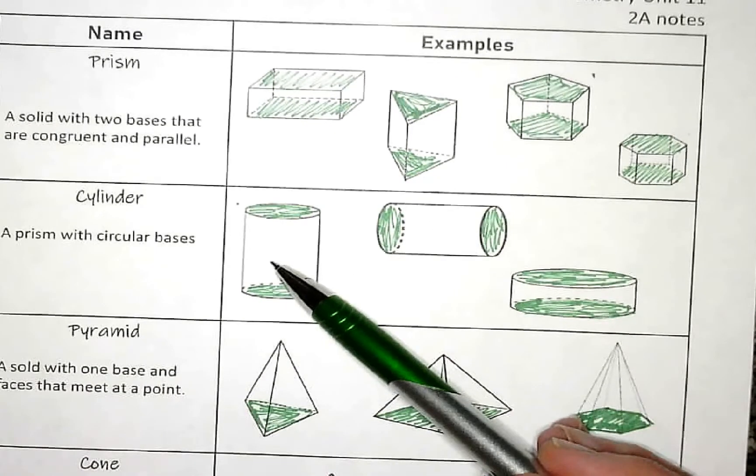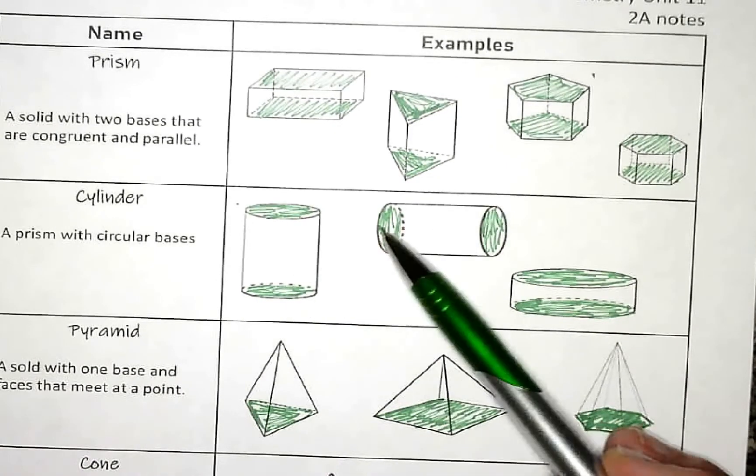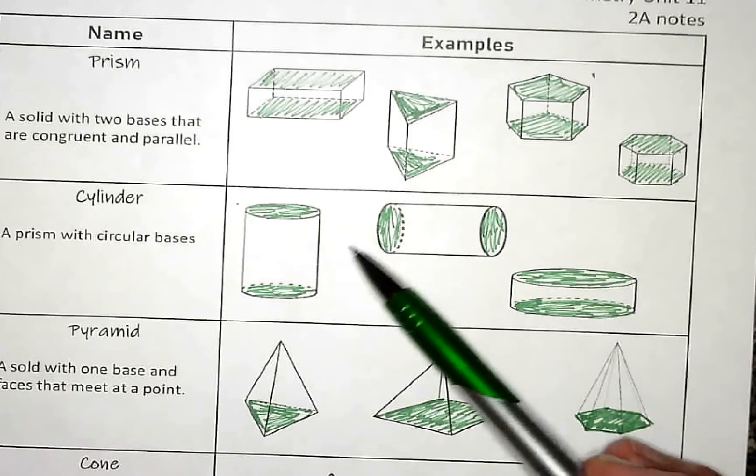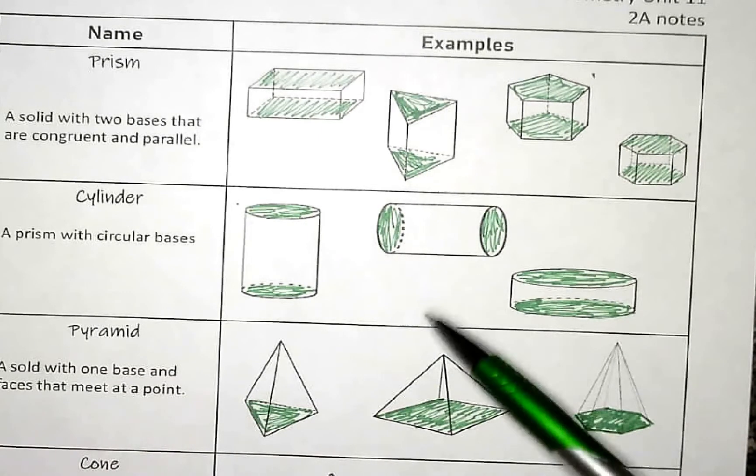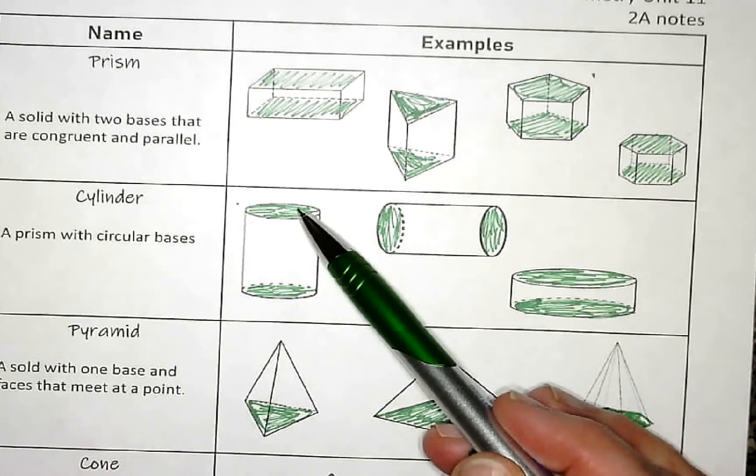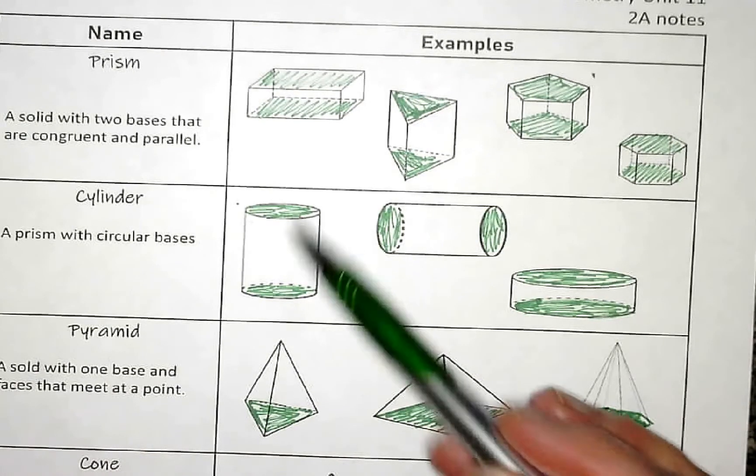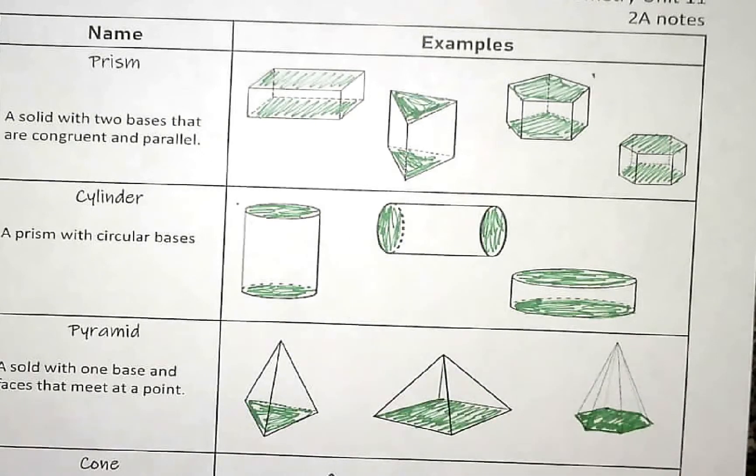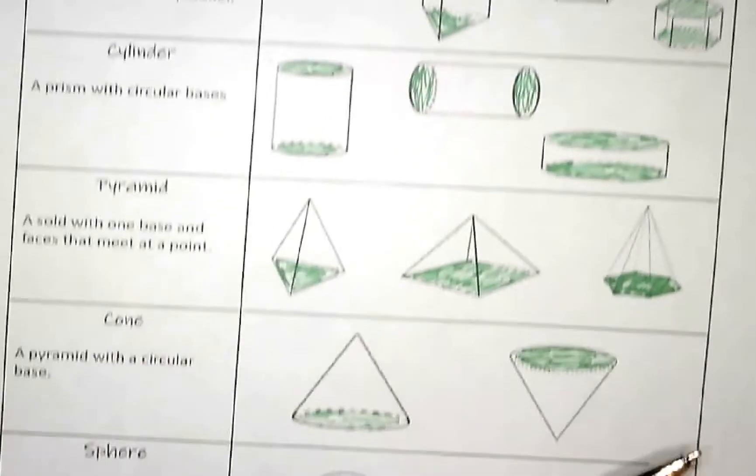Cylinder is a type of prism, but the bases are always going to be circles. I think the cylinder is probably the easiest one to work with because there's not a lot of variation on it, but you can see both of these circles are going to be congruent. They're going to be exactly the same to each other.